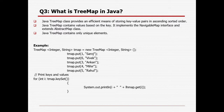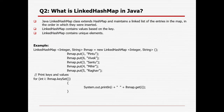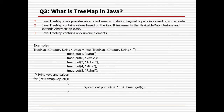What is TreeMap in Java? Java TreeMap class provides an efficient means of storing key-value pairs in ascending sorted order. In HashMap, insertion order is not maintained; in LinkedHashMap, insertion order is maintained; whereas in TreeMap, values are sorted in ascending order based on the key — regardless of insertion order.